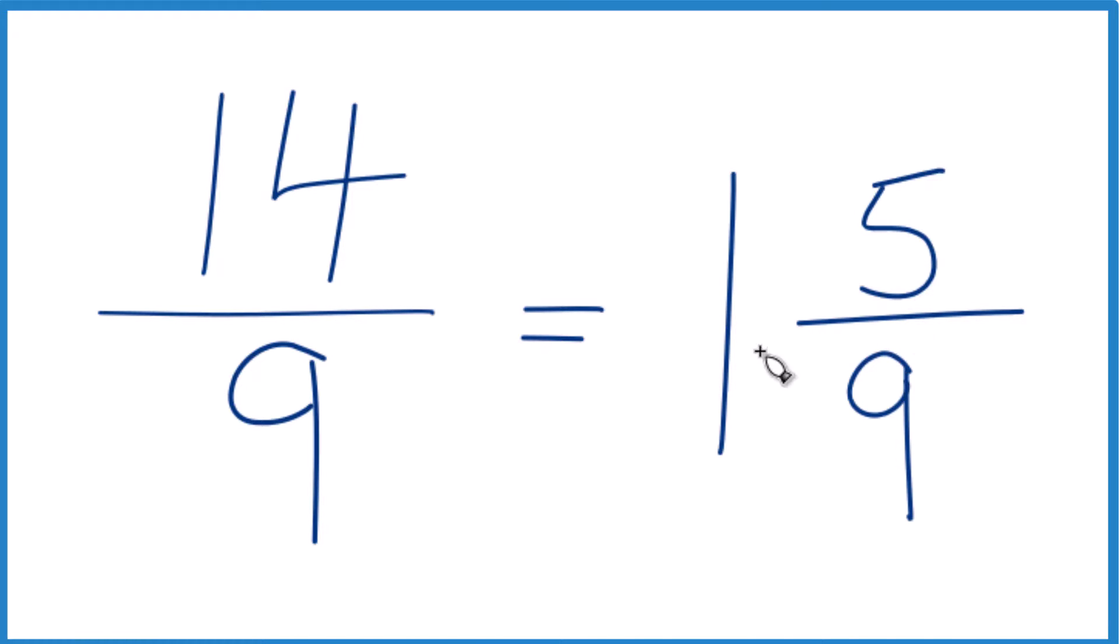And we can check it, because one times nine, that's nine, plus five, nine plus five is 14. And we just brought the nine here across for the denominator.